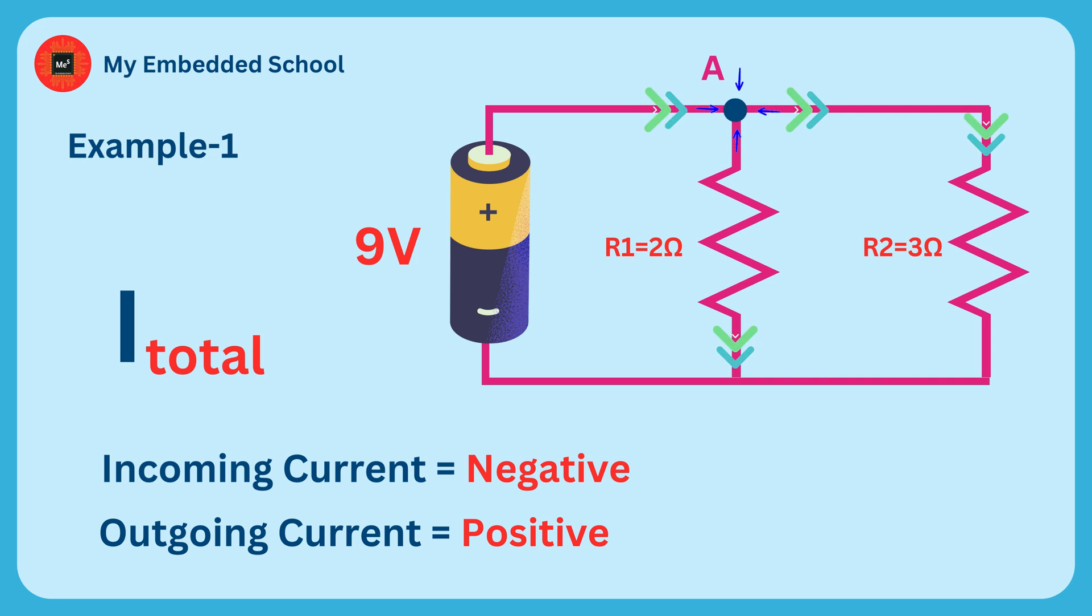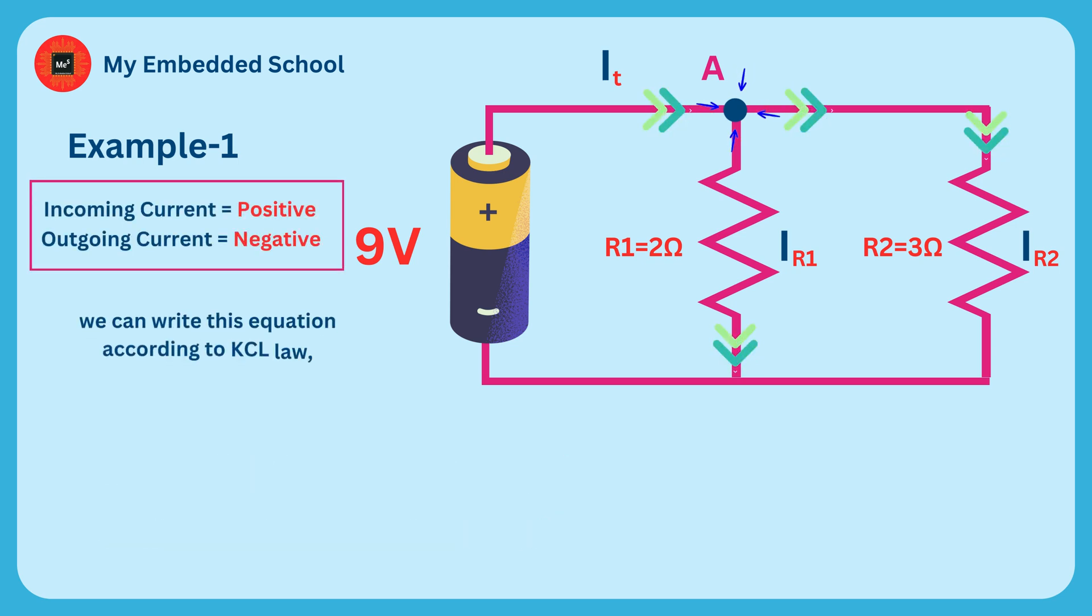At node A, the incoming current is total current IT, and outgoing currents are IR1 and IR2. So we can write this equation according to KCL Law: I total equals IR1 plus IR2.